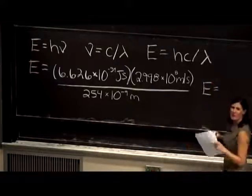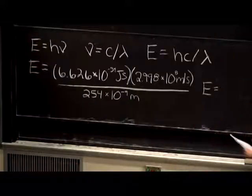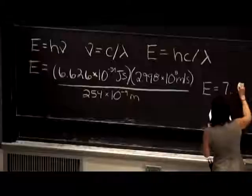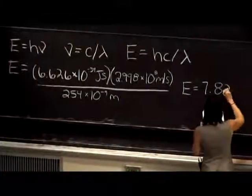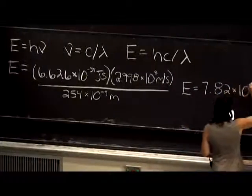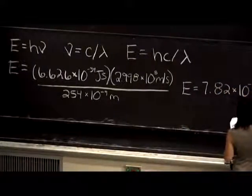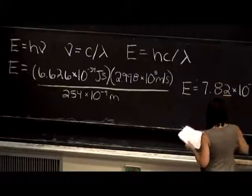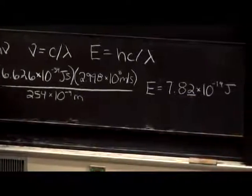So hopefully, if some of you have your calculators with you, you can confirm the answer that I got, which is that the energy is 7.82 times 10 to the negative 19 joules. So remember, what we're talking about here is the amount of energy that's in each photon.